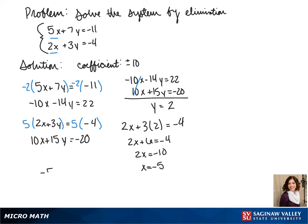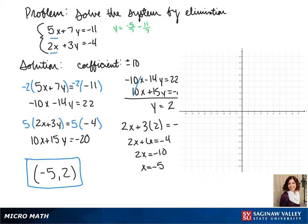Our solution is negative 5, 2. Now we can graph our lines to see what our system looks like. This is our first equation in y-intercept form, but we can take our point and check it in our equation to see if it works.